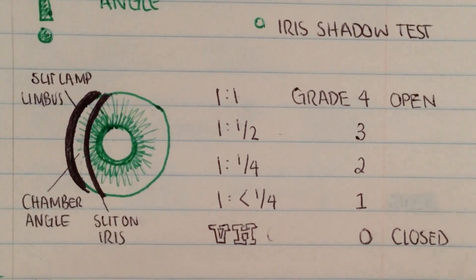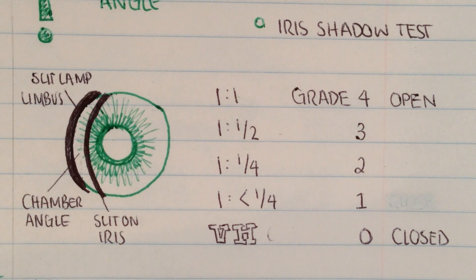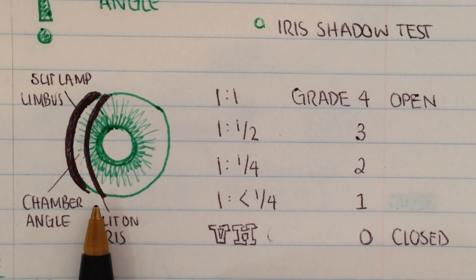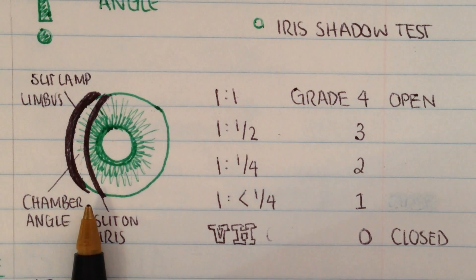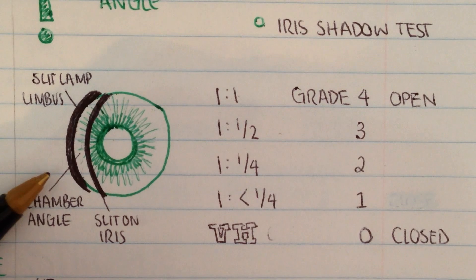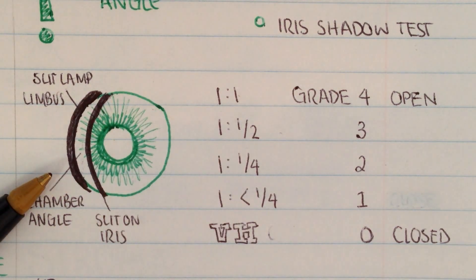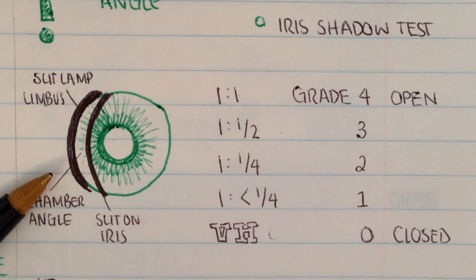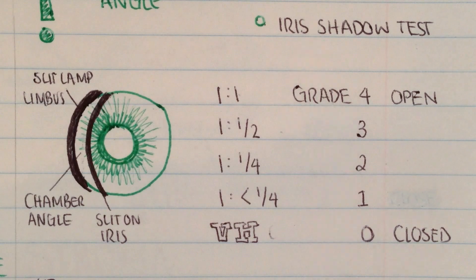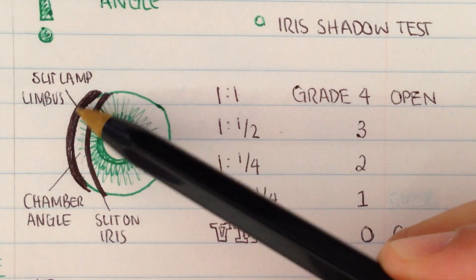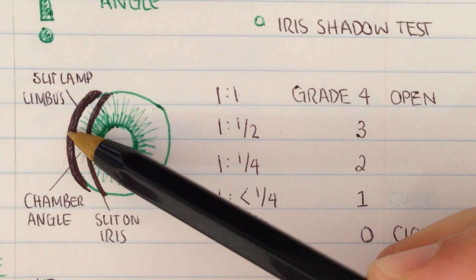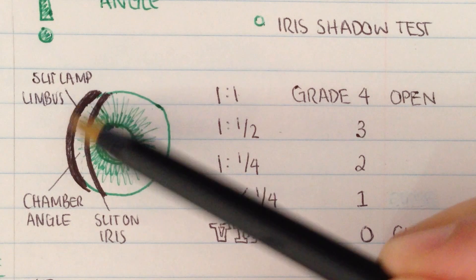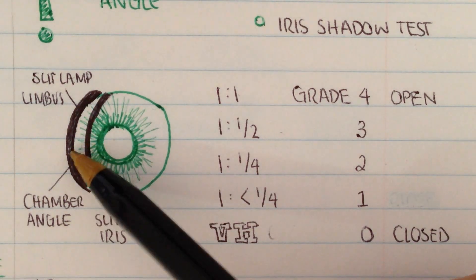The way Van Herrick works is by using the slit lamp. What we need to do is place the observation system directly straight ahead and the illumination system will be 60 degrees off. The light will shine onto the cornea and also onto the iris, and what we're doing is making a comparison between the width of the light that's on the cornea, as close to the limbus as possible, with that of the chamber.